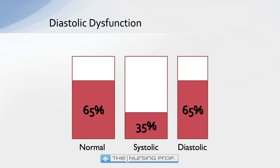To differentiate systolic from diastolic dysfunction, let's look at this diagram. On the left hand side is a normal ejection fraction. Ejection fraction is the amount of blood pumped out with each contraction — the heart can't squeeze every drop out each time, so it pumps out maybe 65 to 70% of the blood in the heart. That would be normal.